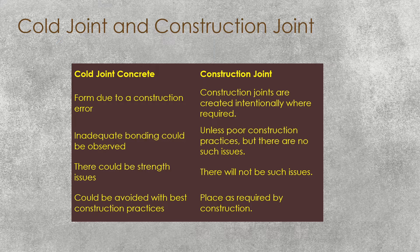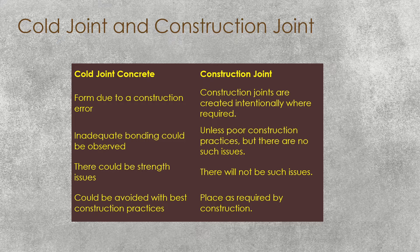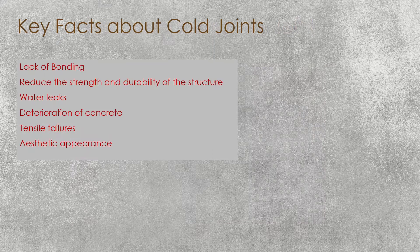Therefore, there will always be strength issues at a Cold Joint, but not in a Construction Joint. A Cold Joint is possible to avoid — if you practice construction correctly, you can avoid it. A Construction Joint, on the other hand, is placed as required, so we don't need to avoid it — you can have a Construction Joint if needed.